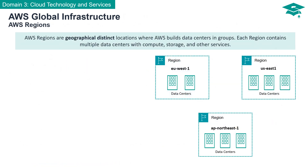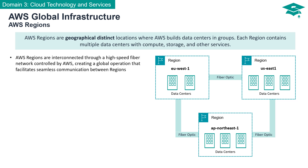AWS regions are geographically distinct locations where AWS builds data centers and groups. Each region contains multiple data centers with compute, storage, and other services. AWS regions are not isolated islands — they're interconnected through a high-speed fiber network meticulously overseen by AWS. This global network facilitates seamless communication and data transfer between regions, enabling your applications to operate harmoniously across the world.